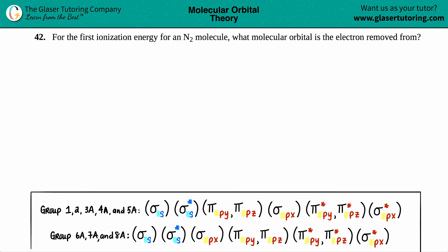Number 42. For the first ionization energy for an N₂ molecule, what molecular orbital is the electron removed from? Great question. I've always wanted to know the answer to this one, but today is my lucky day. Anyway, let's get down to it.